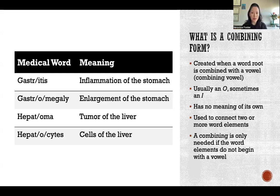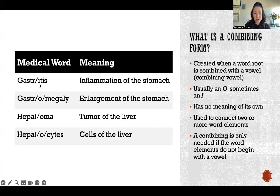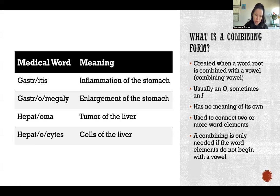We don't always need a combining form — it depends on what suffix we're attaching. I gave a few examples over on the side here. If we look at the word root 'gastr', meaning stomach, and we want to attach it to the suffix '-itis', since '-itis' starts with a vowel, we don't need a combining form. We can simply attach the suffix directly to the end of the word root.